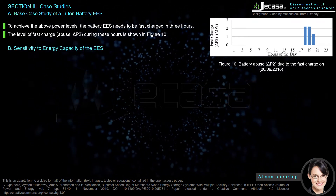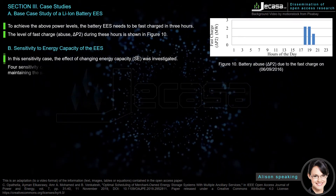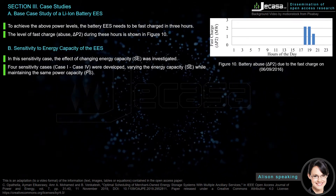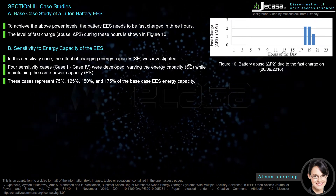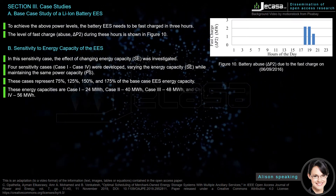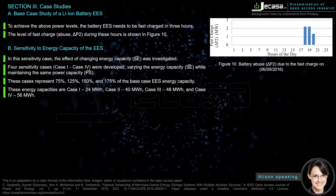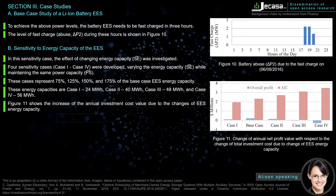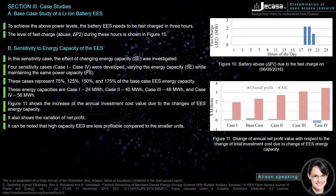The sensitivity to energy capacity of the EASE was investigated. Four sensitivity cases (Case I to Case IV) were developed, varying the energy capacity while maintaining the same power capacity. These cases represent 75%, 125%, 150%, and 175% of the base case EASE energy capacity, corresponding to 24 MWh, 40 MWh, 48 MWh, and 56 MWh respectively. Figure 11 shows the increase in annual investment cost due to changes in EASE energy capacity. It can be noted that high-capacity EASE are less profitable compared to smaller units.